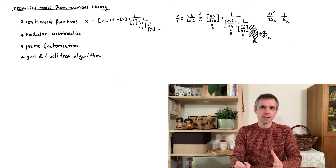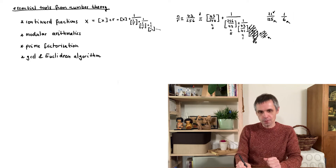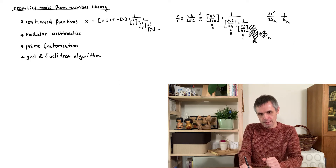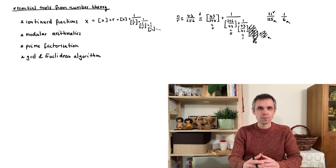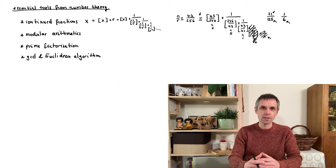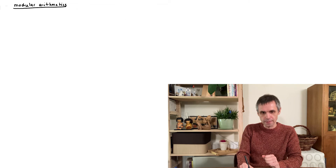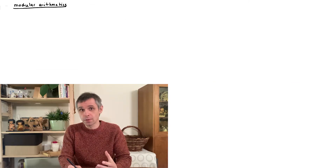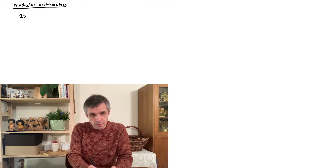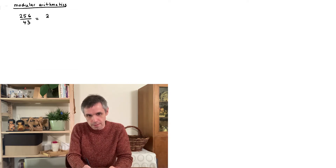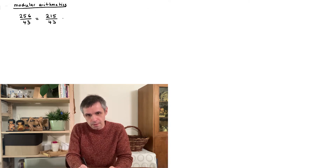This tool from number theory completes our discussion of period finding — we now have everything together to extract information about the period r in a very efficient way. Furthermore, this same tool we will re-utilize when we come to order finding and prime factorization, problems which are based firmly in number theory. We continue with our preparations and turn to modular arithmetics, needing only some very basic aspects — which we encountered already above when determining integer parts.